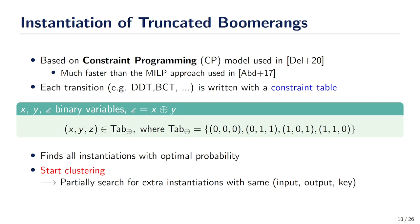We used this model to instantiate many of the truncated Boomerang characteristics found during the first step. Since this model was very fast and efficient, we also started clustering with it. First, we searched for all optimal instantiations of truncated Boomerangs. Then, for each of them, we kept the input, the output, and the difference on the key, and searched for extra instantiations with the same input, output, and difference on the key. We added time limits and extra constraints on the probability of those new instantiations, so they should not be too far away from the optimal probabilities.